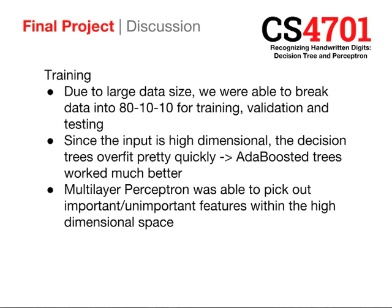For the training, due to the large data size, we broke the data into 80-10-10% splits for training, validation, and testing. Since the input was very high-dimensional, the decision trees overfit quickly, as shown. The Adaboosted trees worked much better and achieved 94% accuracy. The multi-layer perceptron was able to pick out important versus unimportant features in the high-dimensional space quickly, and achieved 99% accuracy on our testing set — the best result of all three methods.